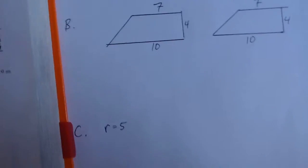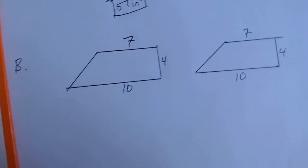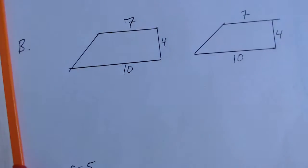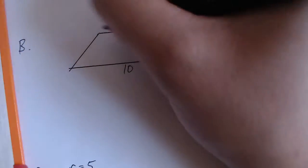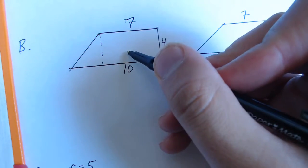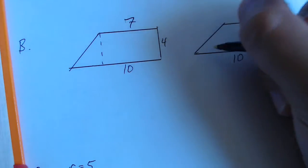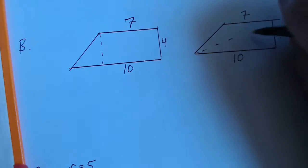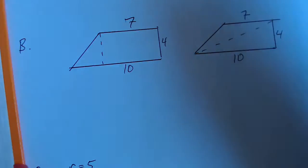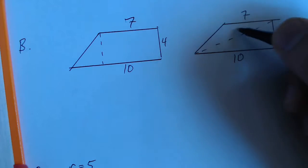Now on to B. They give us this trapezoid, and they tell us to find the area, and they tell us that the dimensions are in feet. Now I've drawn it twice because there's two different ways to go about this. You can cut it into a triangle and a rectangle, or you can cut it diagonally into two different triangles.